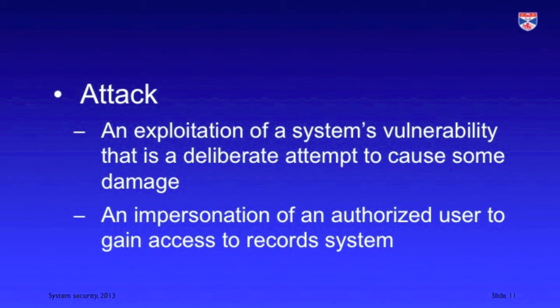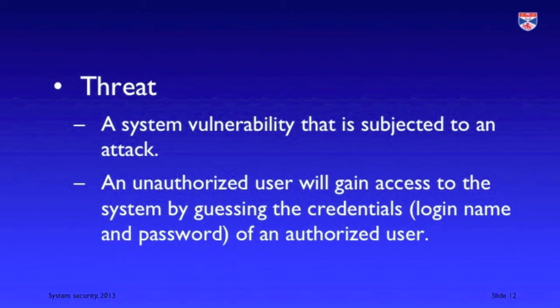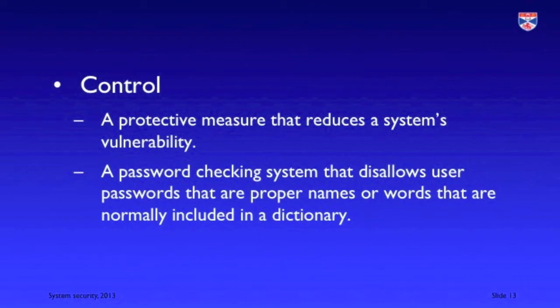An example of an attack using a medical record system would be the impersonation of a legitimate user using stolen passwords to gain access to the system. A threat is a precursor to an attack — it's an exploitation of a system vulnerability, something that could happen but need not necessarily happen. So it's the possibility that weak passwords could be exploited to gain access to a system. A control is a protective measure that attempts to reduce a system's vulnerability. A password checking system which tells users that they have set a weak password would be an instance of a control.